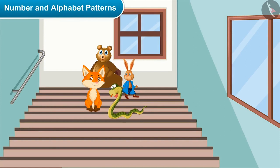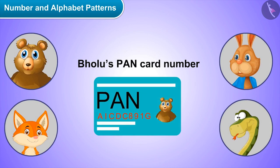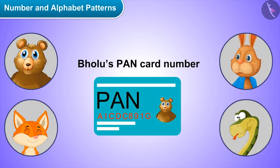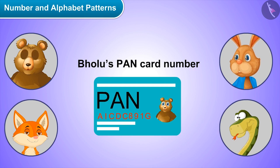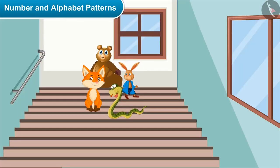Today while giving my registration number, the officers there asked for my PAN card. Do you have a PAN card? Yes, see this — your PAN card number is A I C D C 8 9 1 G. Hmm, one more pattern! Oh yeah, this pattern also contains numbers and alphabets in it.